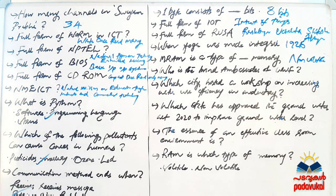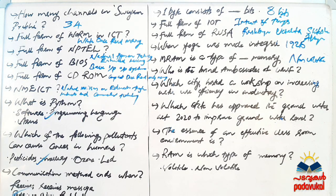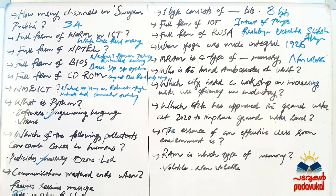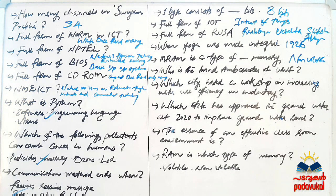In ICT, RAM stands for Random Access Memory and ROM stands for Read Only Memory. RAM is volatile memory. We have uploaded a few videos covering the basics of ICT.